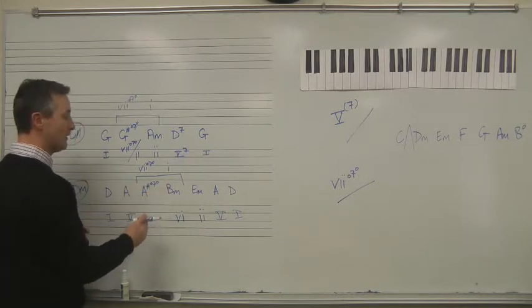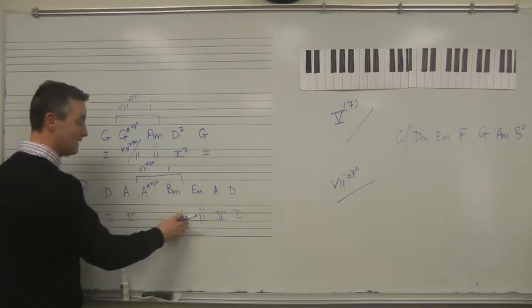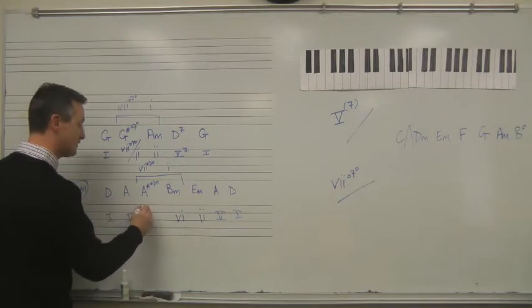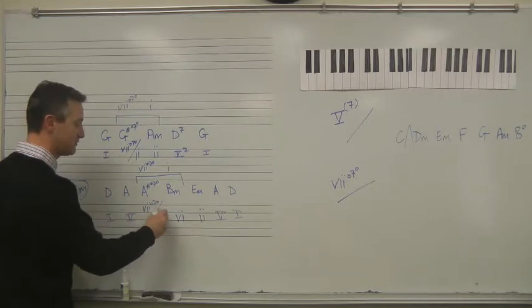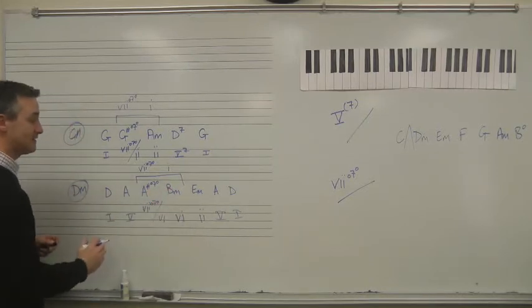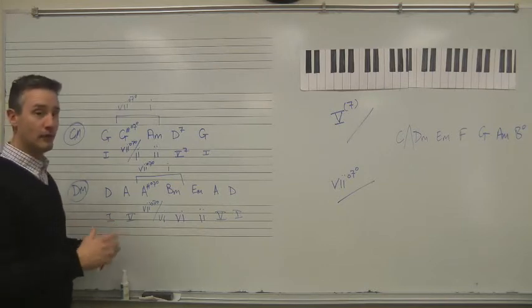But we're not in B minor, B minor is not 1, it is 6. So this is not a 7 to 1, but a 7, fully diminished 7, of 6. Because B minor is 6 in this key, and this is a secondary dominant, not a primary dominant.